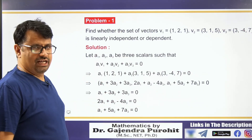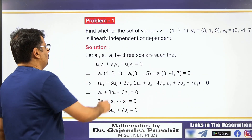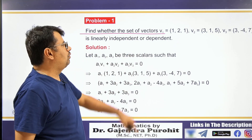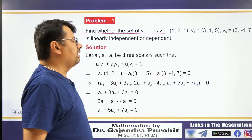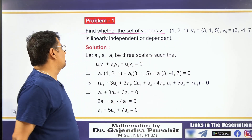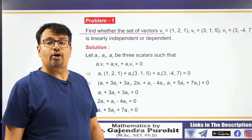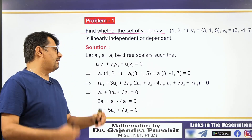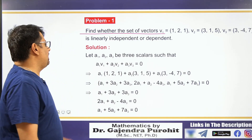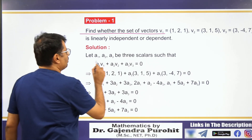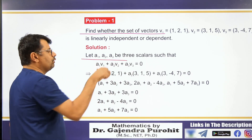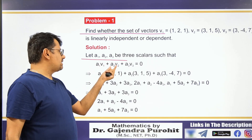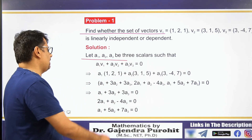Example: Find whether the set of vectors V1 = (1, 2, 1), V2 = (3, 1, 5), and V3 = (3, −4, 7) is linearly independent or dependent. Let's see how to determine this.